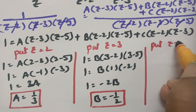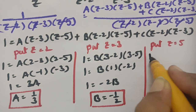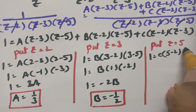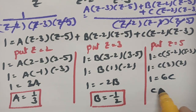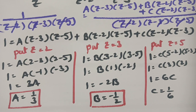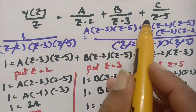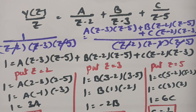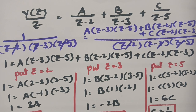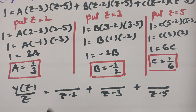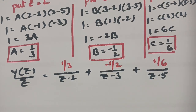To find C, put z = 5: 1 = C·(5 - 2)(5 - 3) = C·(3)(2) = 6C, so C = 1/6. Substituting A = 1/3, B = -1/2, C = 1/6 back: Y(z)/z = (1/3)/(z - 2) + (-1/2)/(z - 3) + (1/6)/(z - 5).